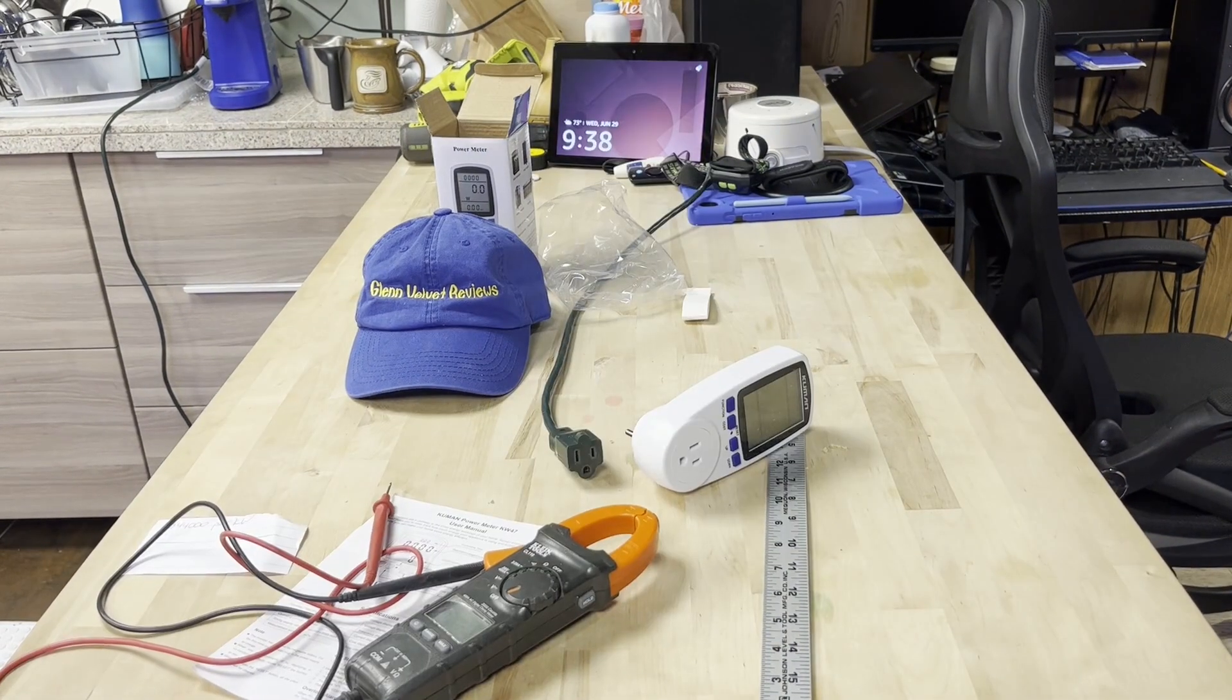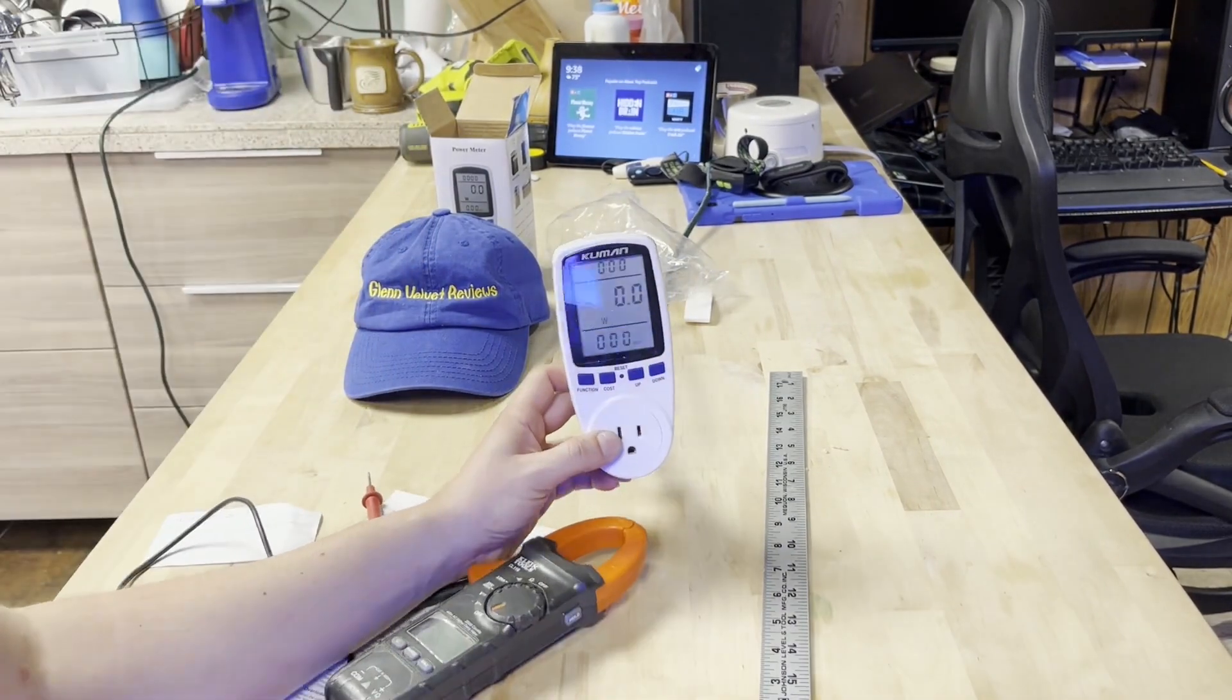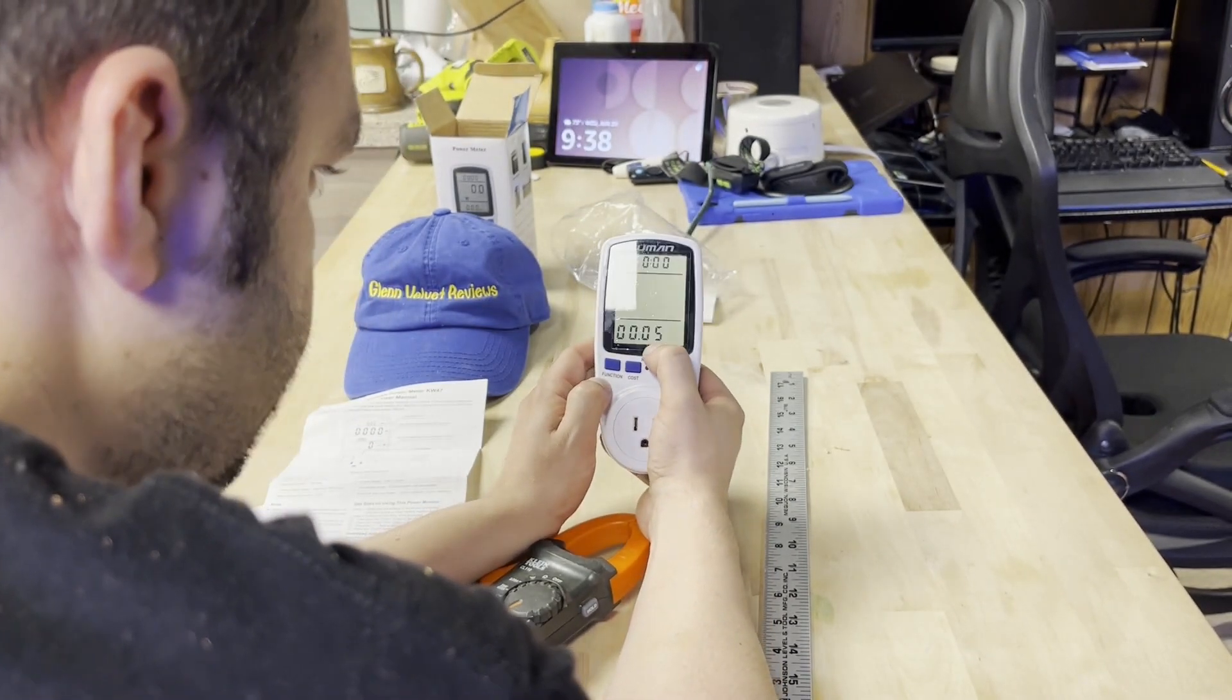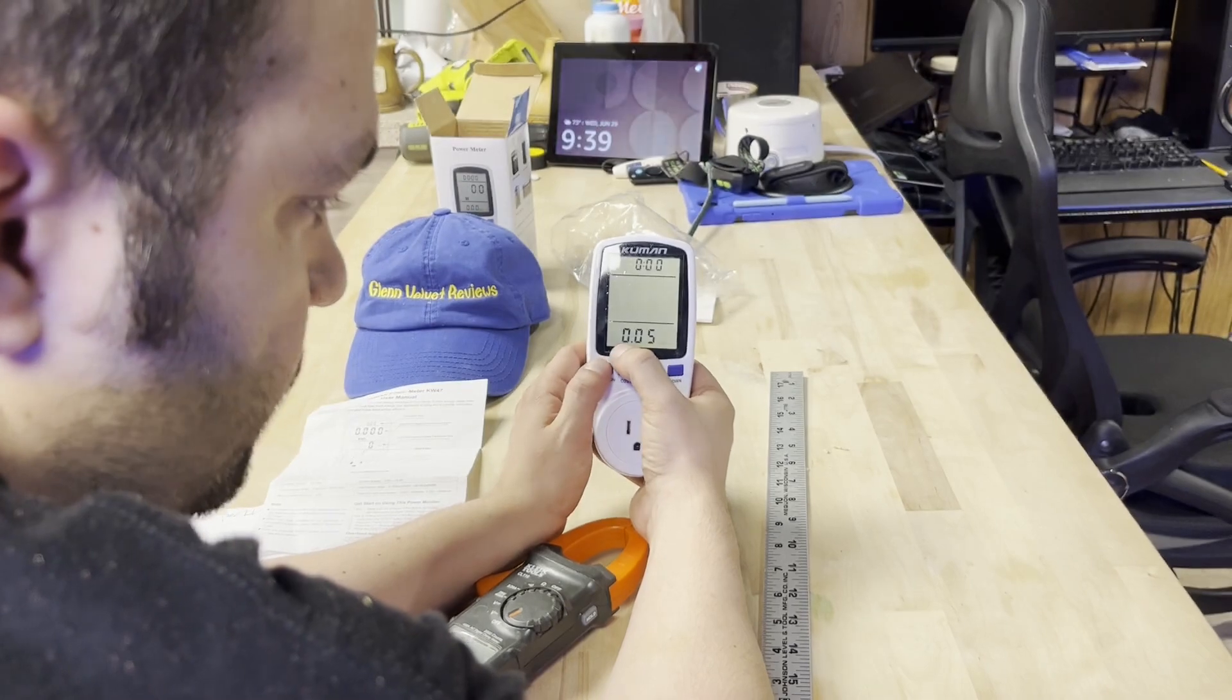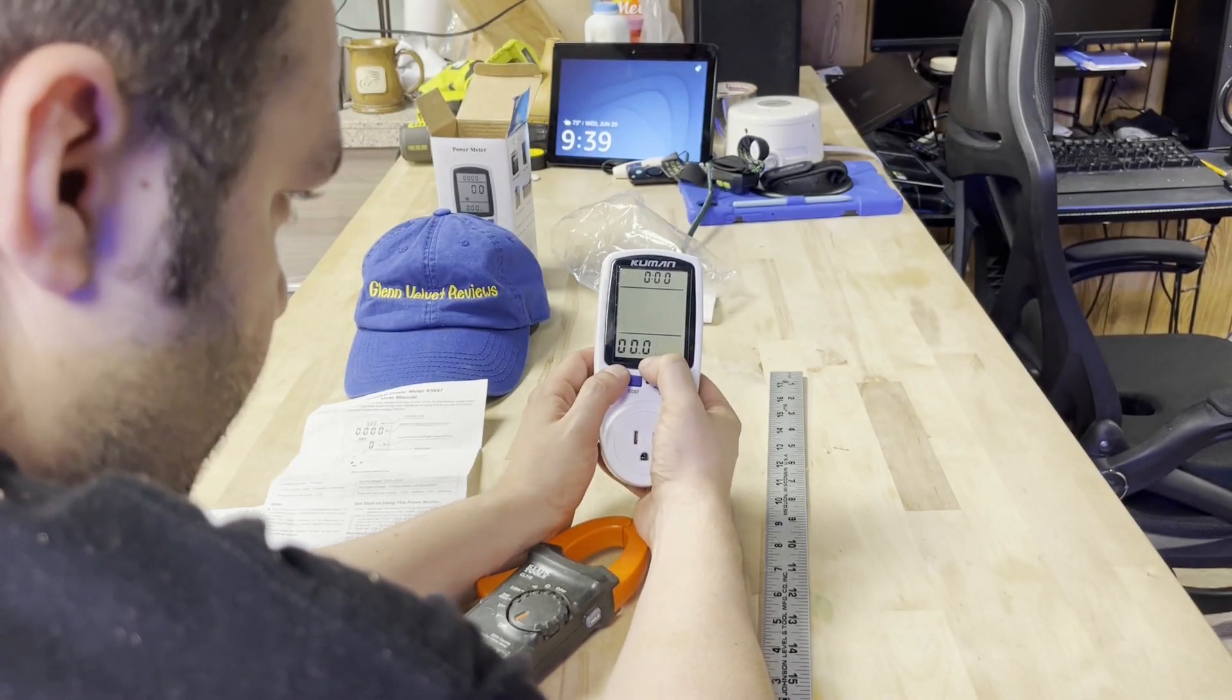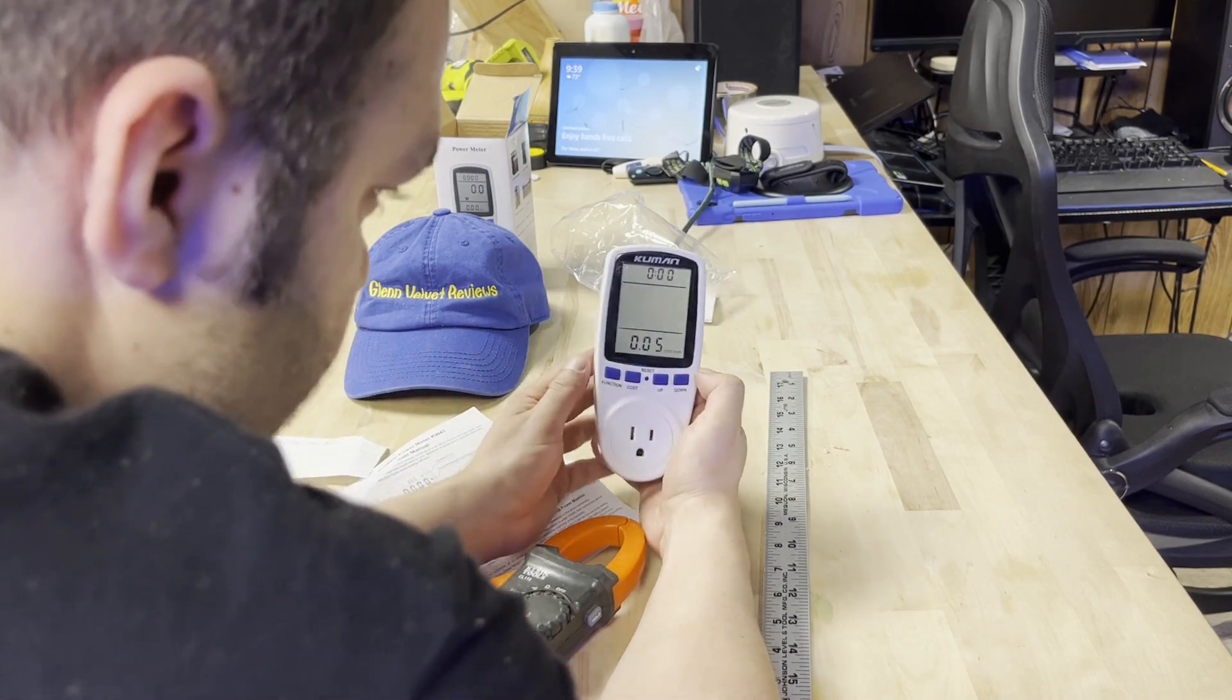All right everyone, we're back with Glenn Velvet Reviews. I read the instructions, it's pretty simple. You're going to hold down the cost button until this blinks. I put mine to 0.05. How you go through it is you hit the function button and it'll go through each digit. It says cost per kilowatt - from what my bill said, mine's 0.045 but I rounded up to 0.05, and that's per kilowatt.